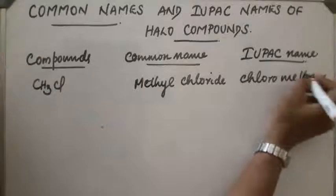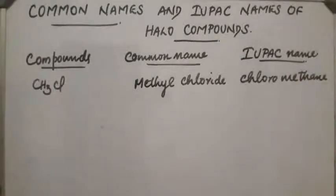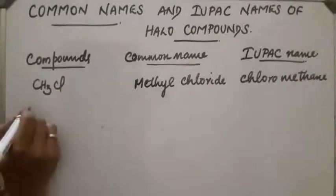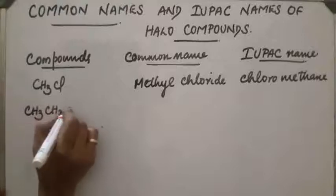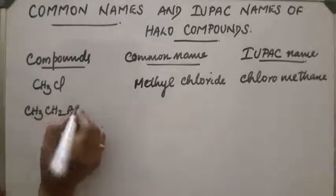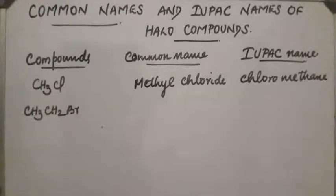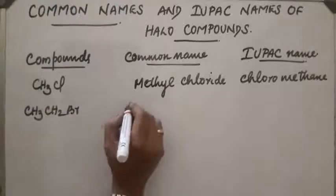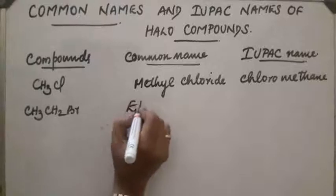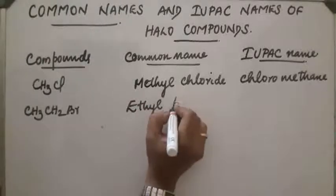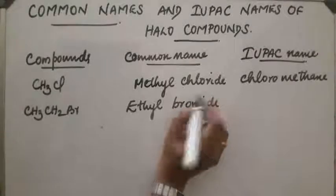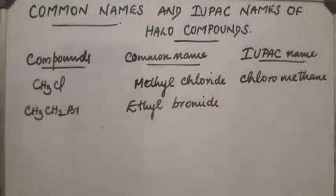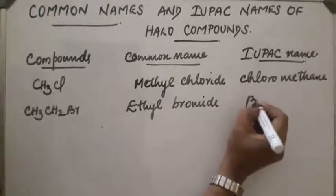Next compound CH3CH2Br. Its common name is ethyl bromide and its IUPAC name is bromoethane.